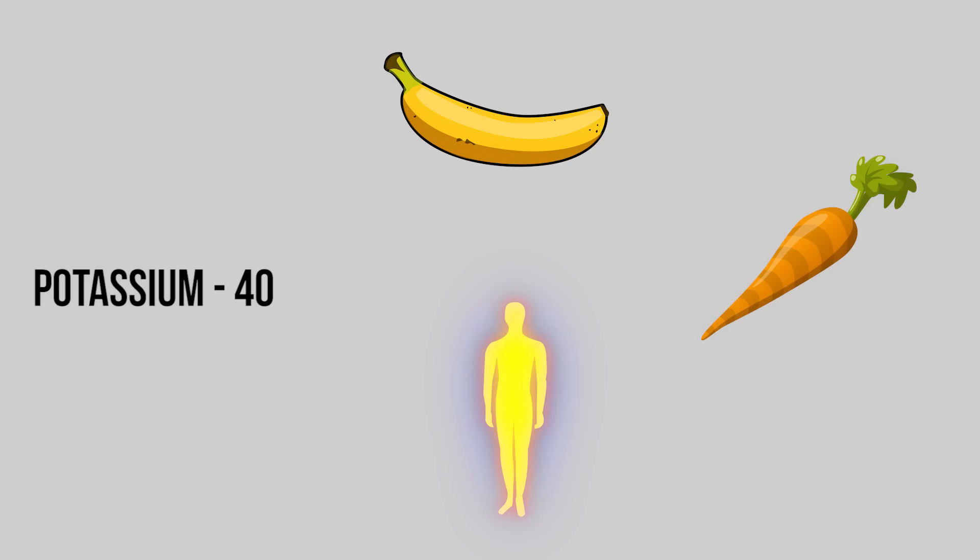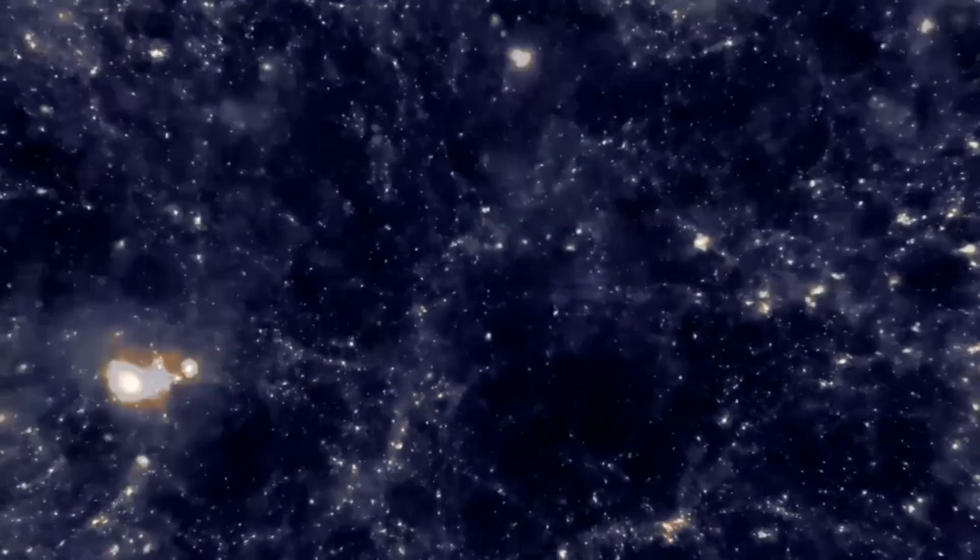This isotope of potassium-40 is usually found in bananas, carrots, and of course in human bodies.